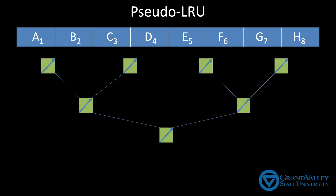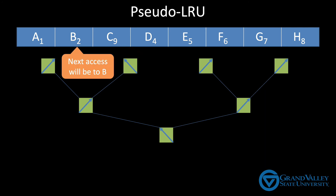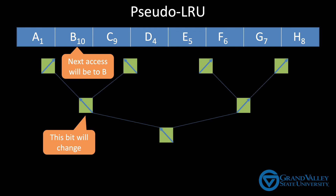So now let's say the next access is to variable C. This will be a cache hit because C is already in the block, so we need to update the boxes on the path to C, which will change these two. When we make the update, you see the arrows changed, so the path from the bottom now points at C. I change the subscript on C from 3 to 9 so we can tell that that is the most recently accessed block. Now let's say our next access is to B. Again, we need to update the arrows on the path, which means this arrow will need to change — the other two arrows in the path are already pointing in the correct direction. So we'll update the arrow and update the subscript on B to 10, indicating that's the tenth access to that line in the cache.